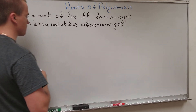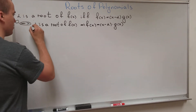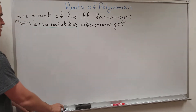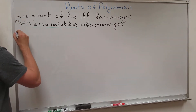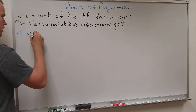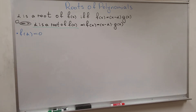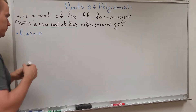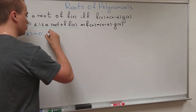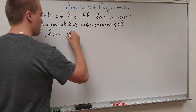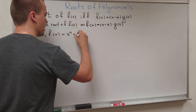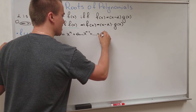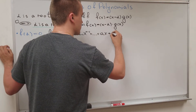How am I going to show this? I'm going to expand what I'm given. If alpha is a root of f(x), we know that f(alpha) equals zero. Before proving this, let's take a general polynomial: f(x) = x^n + a_{n-1} x^{n-1} + ... + a_1 x + a_0.